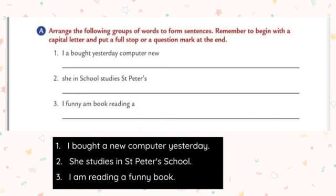Let us learn more about subject and predicate with given examples. First: 'The chef is cooking pasta and chicken.' Who is cooking? The chef. So 'the chef' is the subject. 'Is cooking pasta and chicken' tells about the chef, so it is the predicate. Second: 'The prisoner was jailed for 10 years.' Who was jailed? The prisoner — that is the subject. 'Was jailed for 10 years' is the predicate.